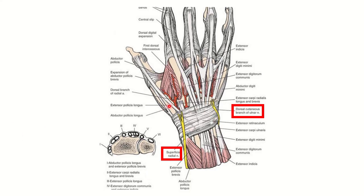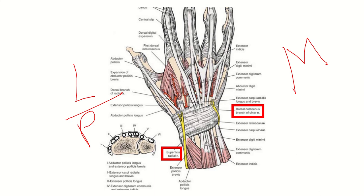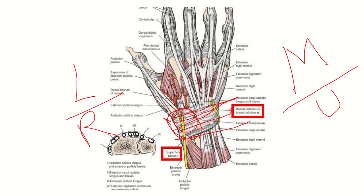Here we can see this is the wrist joint and here is the extensor retinaculum. This whitish fiber is the extensor retinaculum. In this picture we can see this is the lateral side — the radial side — and this is the medial side. The wound was above the extensor retinaculum, located on the lateral side. This lacerated injury is close to this area, and we can see there is one important structure.